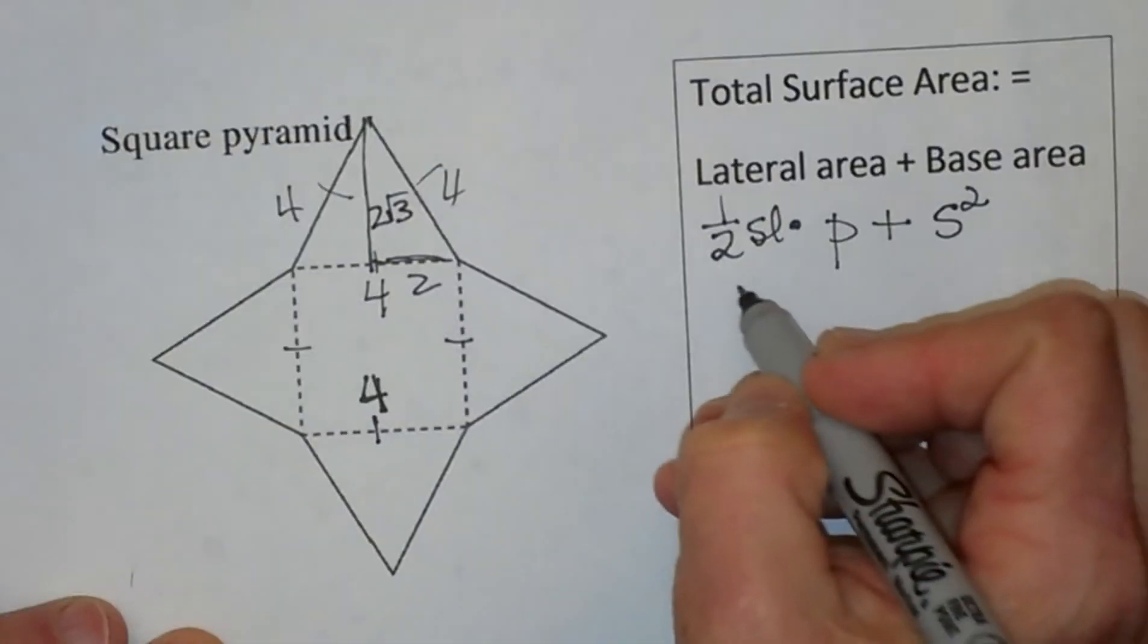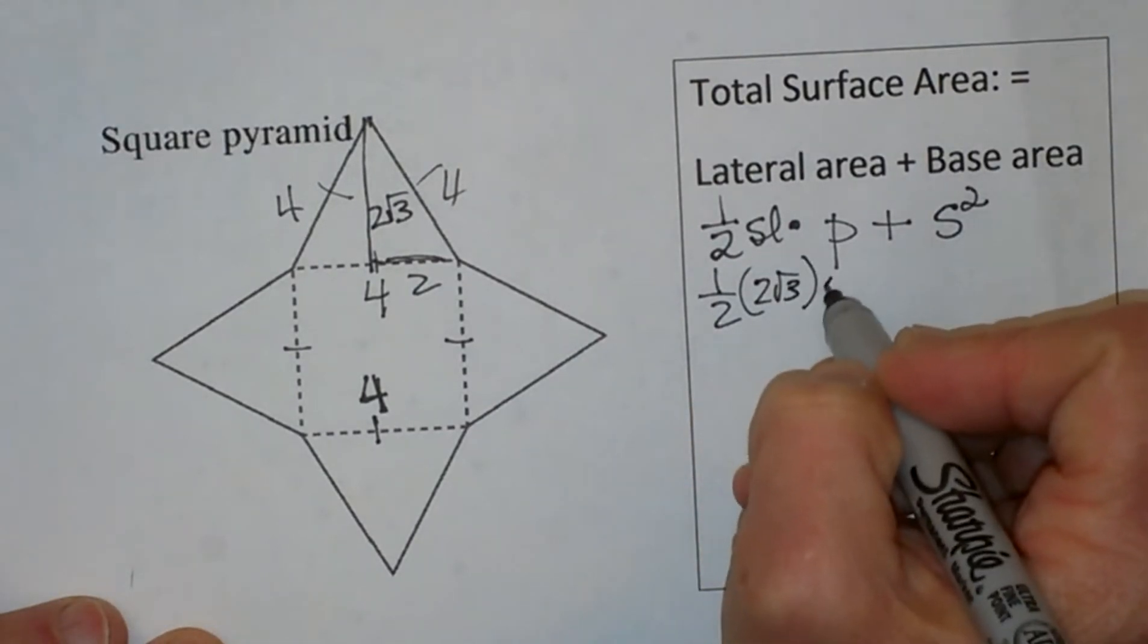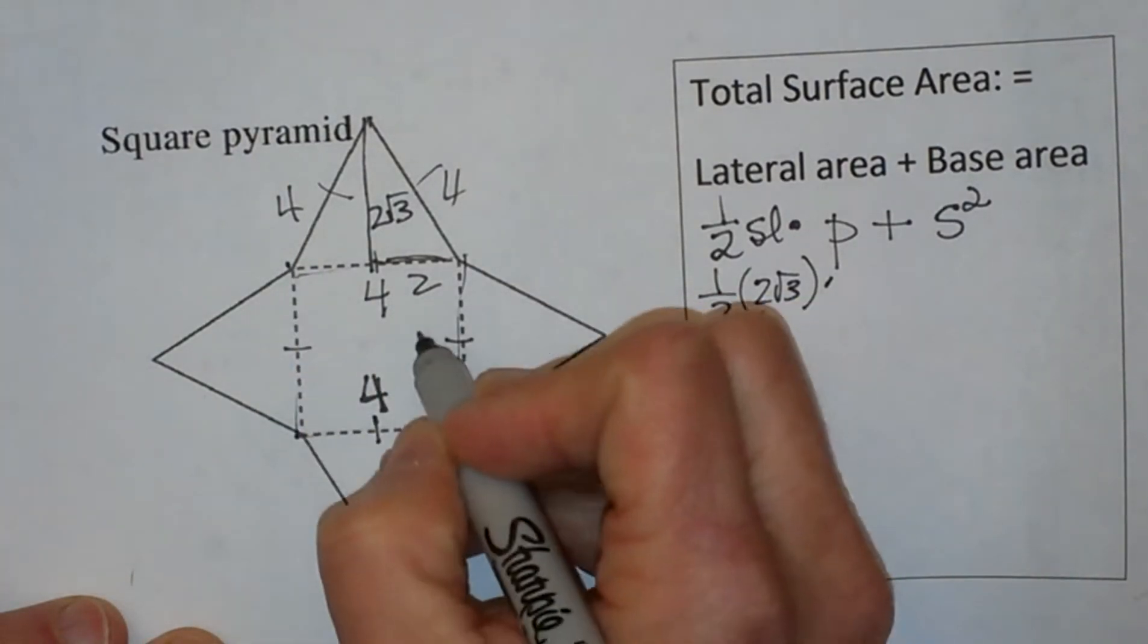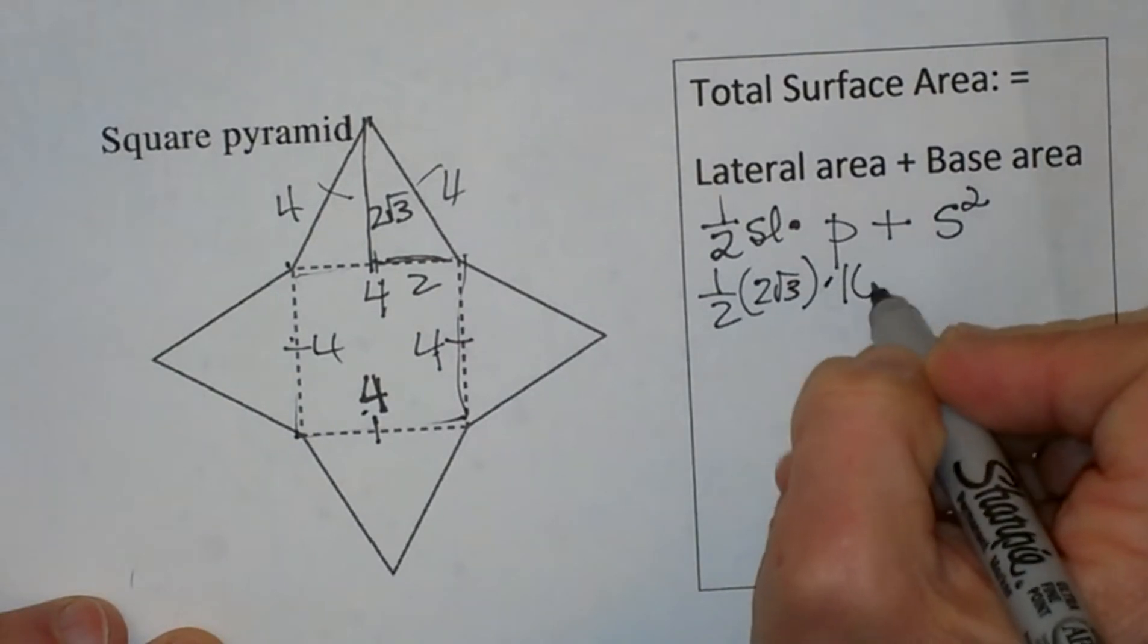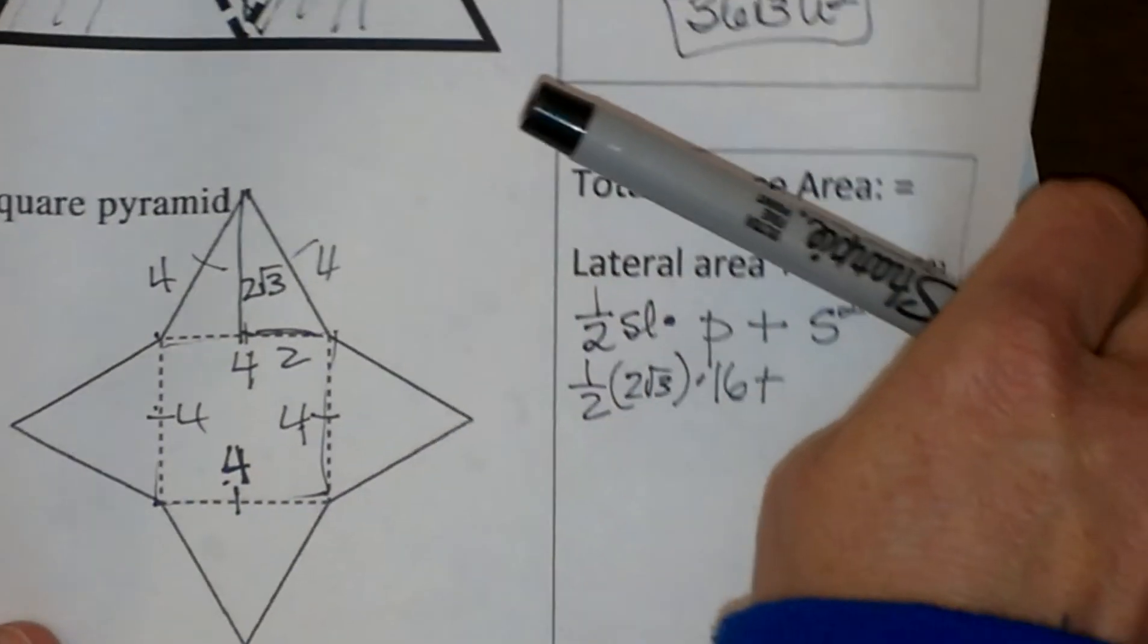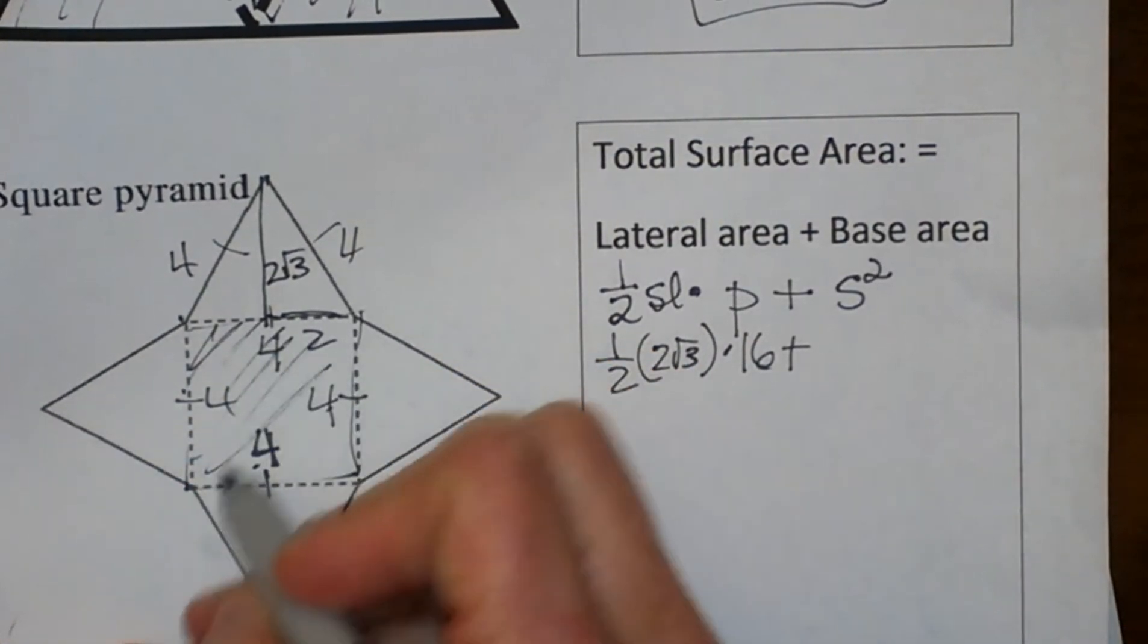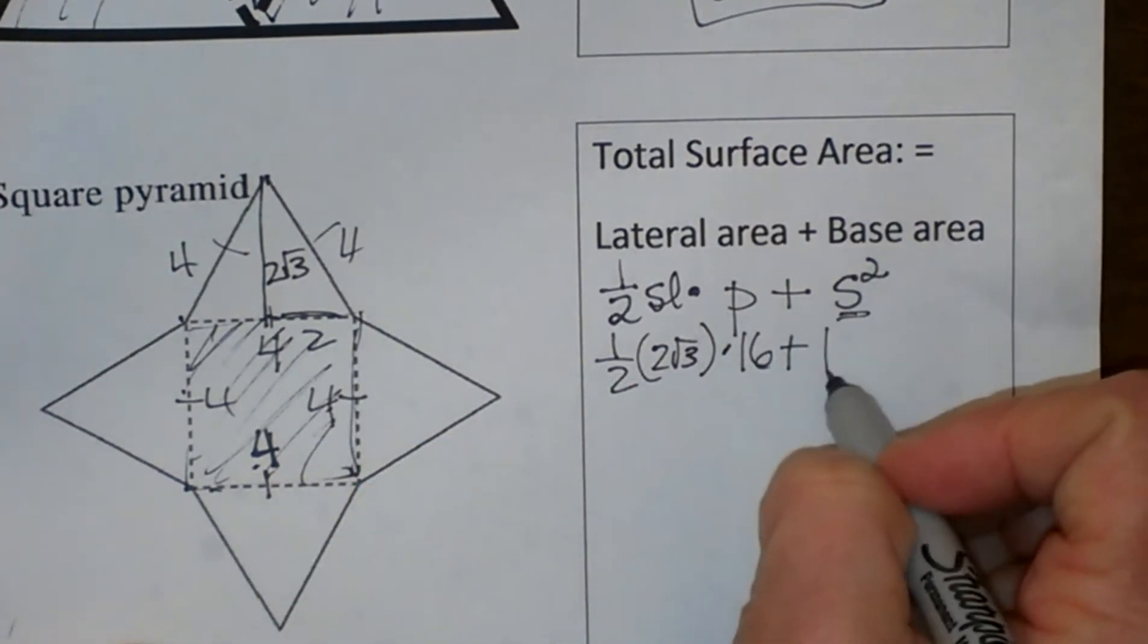So I can now plug in one half, my slant height, which is 2 root 3, times my perimeter, well what is the perimeter of the base this time? My base is a square, so it is 4, 4, 4, and 4, so it is 16. And then I am going to find the area of my base, well the base is a square, so the formula for the area of a square is side squared, well the side is 4, so it is just 16.